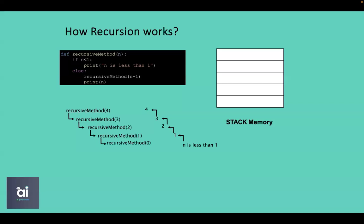This is how a recursive method is managed in stack memory internally. To recap: stack memory is used by the system for managing recursive calls. Every time a recursive method calls itself, the system stores it in the stack because there are execution statements left after the call. This means the system remembers the point where it stops to call the recursive method with a different parameter, and this is done by storing methods in stack memory using the LIFO method — last in, first out.